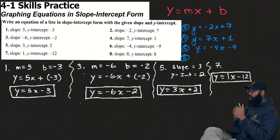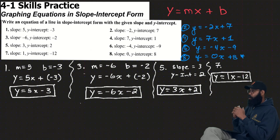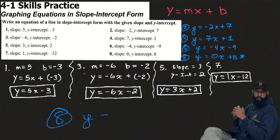For our last one, nothing tricky. You understand that 0 times x is 0, so number 8 is simply y equals 8.